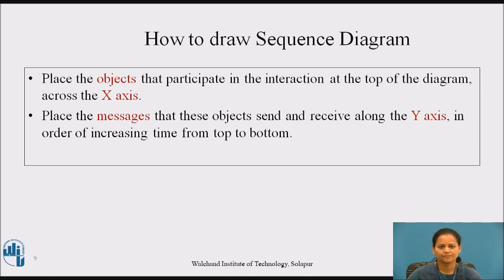We draw a sequence diagram by first placing the objects that participate in the interaction at the top across the x-axis. Typically, we place the object that initiates the interaction at the left and increasingly more subordinate objects to the right. Next, we place the messages that these objects send and receive along the y-axis in order of increasing time from top to bottom. This gives a clear visual cue to the flow of control over time.